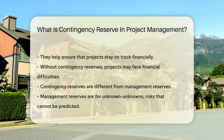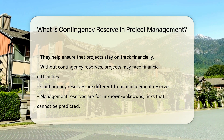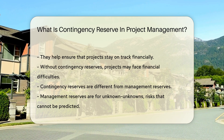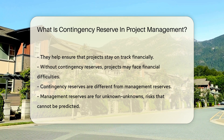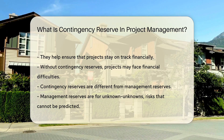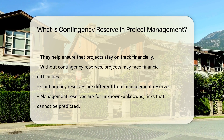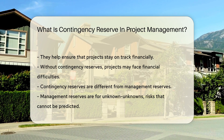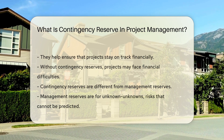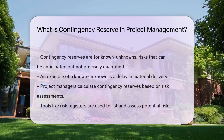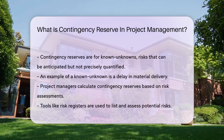Known unknowns are risks that can be anticipated but not precisely quantified. For example, a delay in material delivery is a known unknown — it can be anticipated but not precisely timed or costed.